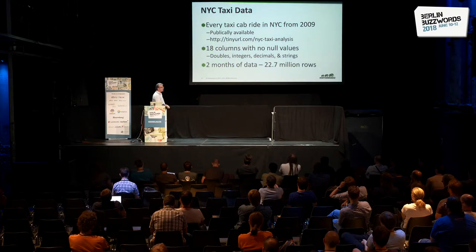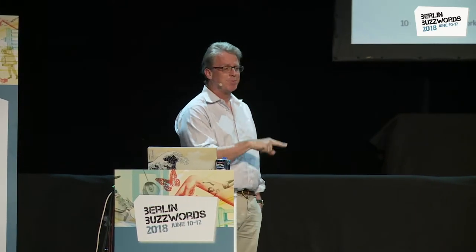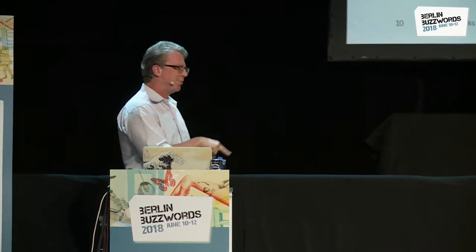The first dataset was the New York taxi dataset. Every time someone takes a taxi in New York, a dataset is published with a row for each ride — where they got picked up, dropped off, what time it was, and how much they paid in fares and tip. It's a great dataset. Even though it's anonymous, you can identify some people when they're dropped off in the suburbs. We pulled 22 million rows out of it.